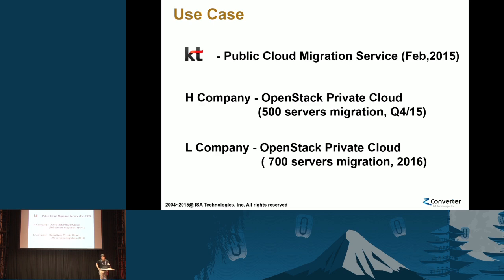This is just a starting project. If they succeed in migrating these 500 servers, next year they are going to move a few thousand servers to the OpenStack private cloud. Another opportunity involves 700 servers to be migrated to a private OpenStack cloud. We are also talking about cloud migration technology with the Google Cloud Platform team in Mountain View — perhaps our technology will be integrated with Google Cloud Platform early next year.